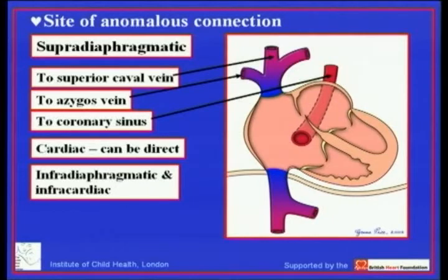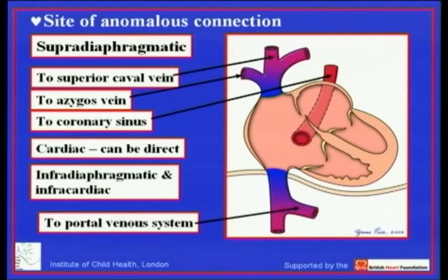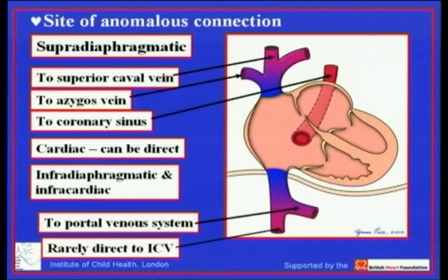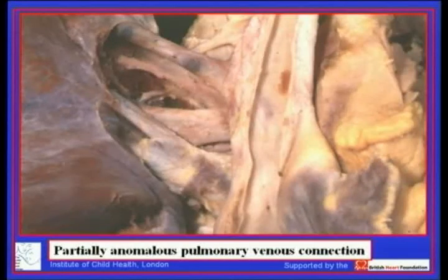The other variant is infradiaphragmatic connection, where the channel runs through the diaphragm into the abdomen — almost always to the portal venous system, and rarely to the inferior caval vein. I have not personally seen the latter, but it is documented in the literature.